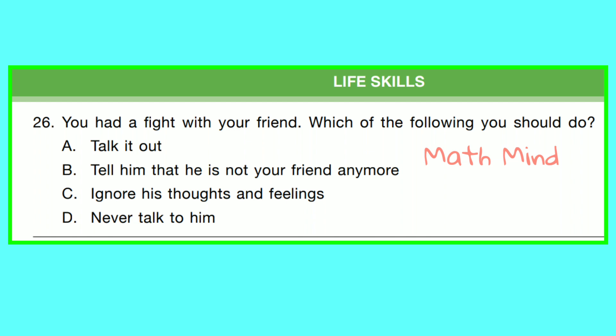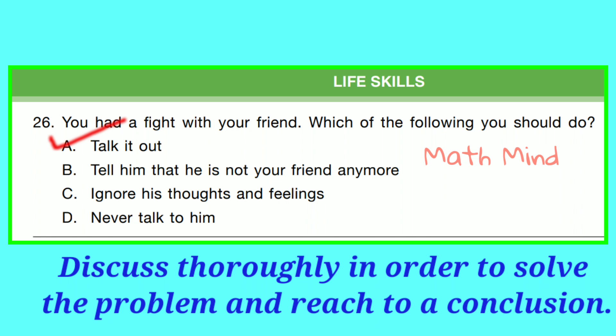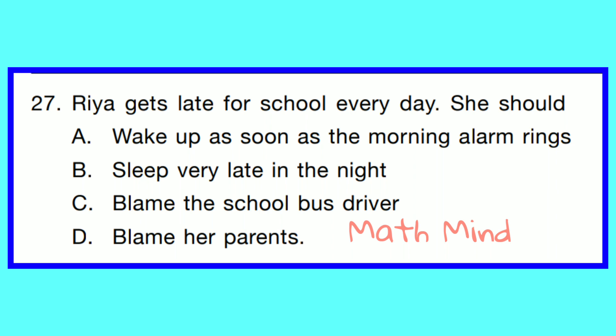Life Skills. Question No. 26. You have a fight with your friend. Which of the following should you do? Option A is correct — Talk it out. It means to discuss thoroughly in order to solve the problem and reach a conclusion. Question No. 27. Rhea gets late for school every day. She should Option A — wake up as soon as the morning alarm rings.